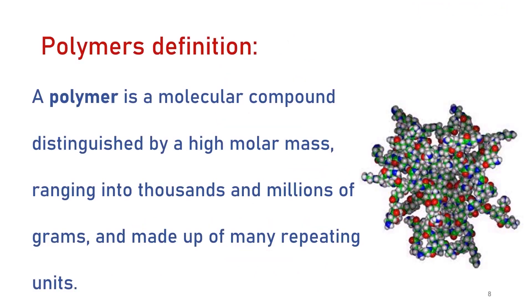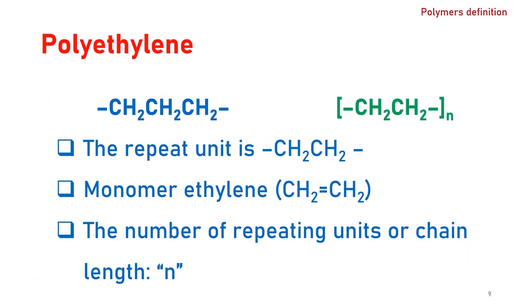So, what is the definition of a polymer? A polymer is a molecular compound distinguished by high molar mass, ranging between thousands to millions of grams, and made of many repeating units. For example, polyethylene is a polymer made from the repeating units of ethylene monomers.